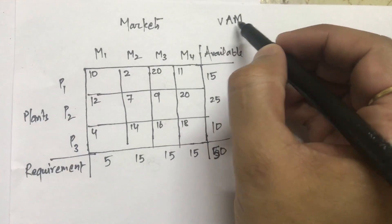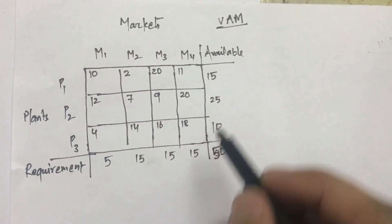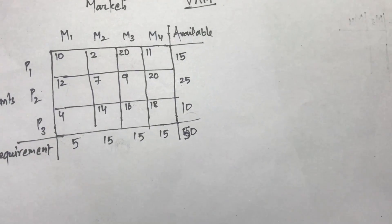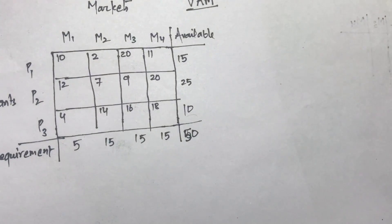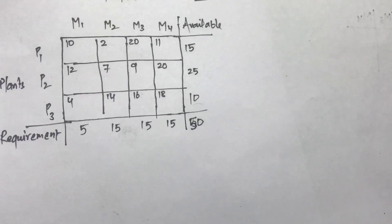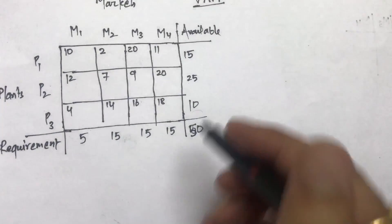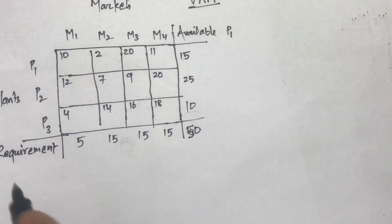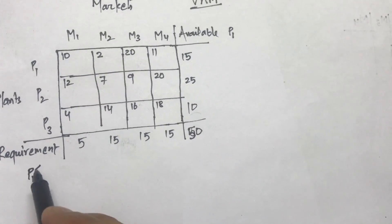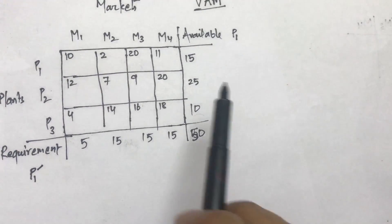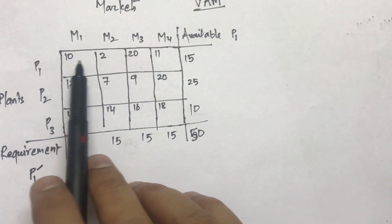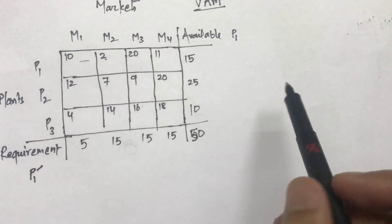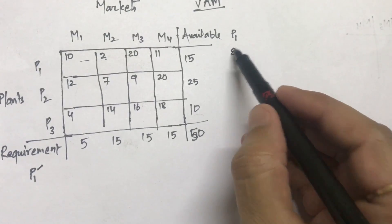In Vogel's Approximation Method, the first step is to calculate penalties for each row and each column. I'm writing row penalties as P1 and column penalties as P1-dash for the first iteration. For the first row penalty, I find the minimum and second minimum cost. The minimum cost is 2 and the second minimum is 10, so the difference — the penalty — is 8.